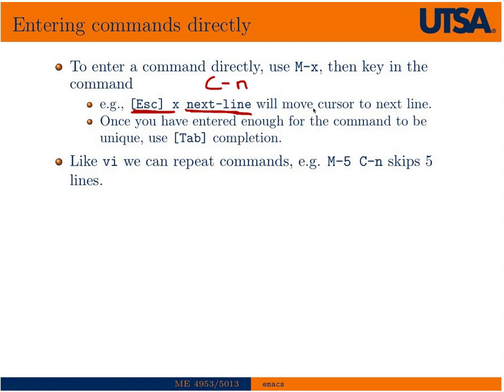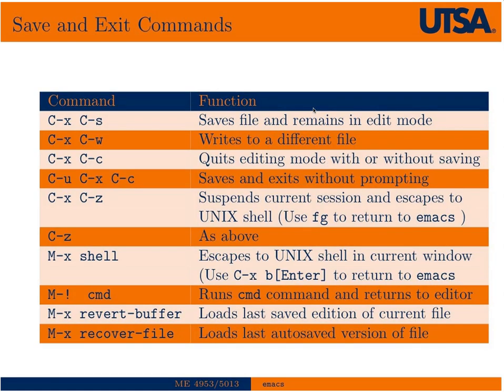Like Vi, we can repeat commands. If we wanted to repeat any command that has a key binding, we can use the meta key with a number. So if we say Meta-5 Control-N, that'll skip five lines. The next slides go through just a bunch of common functions and key bindings used in Emacs. I'm not actually going to go through them — I left them here for your reference — but I'll move over and do an example shortly.